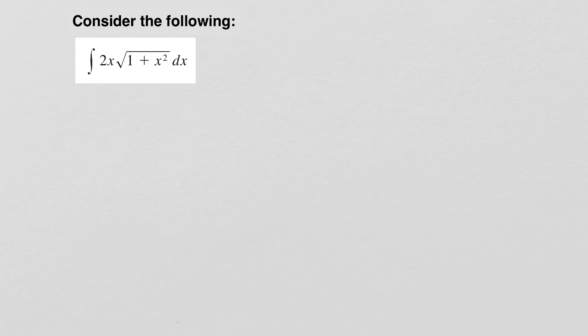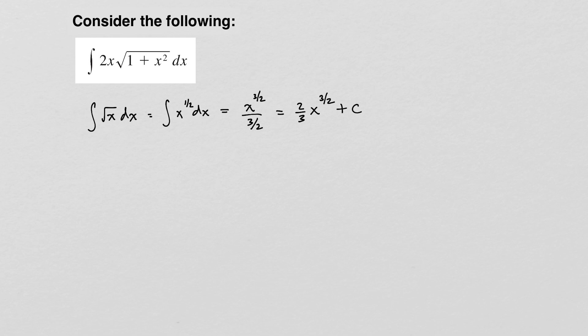We know how to take the integral of a square root function, because we can rewrite it as x to the 1 half and use the power rule to get the antiderivative. But we don't have the square root of x — we have the square root of 1 plus x squared, plus an additional function 2x multiplied to that. This type of integral requires the substitution rule, and I'm going to show you the rule from a very intuitive standpoint prior to giving you the formal rule.